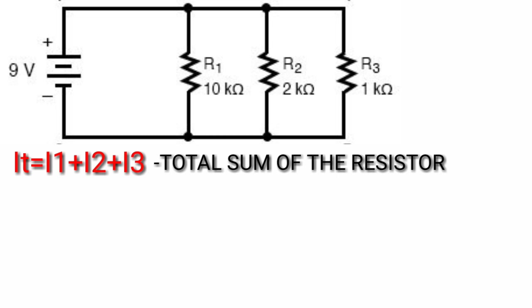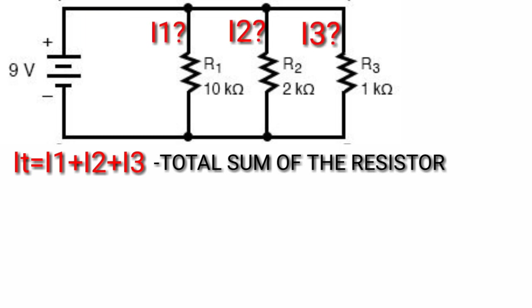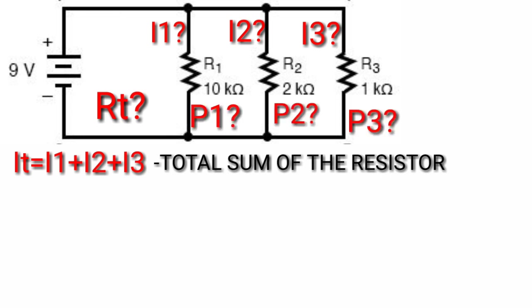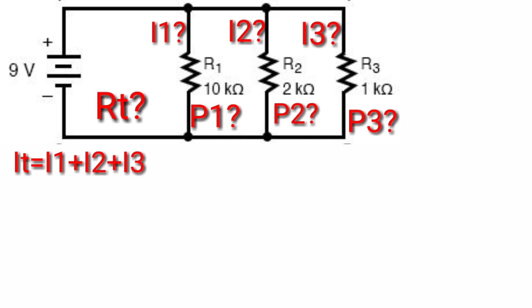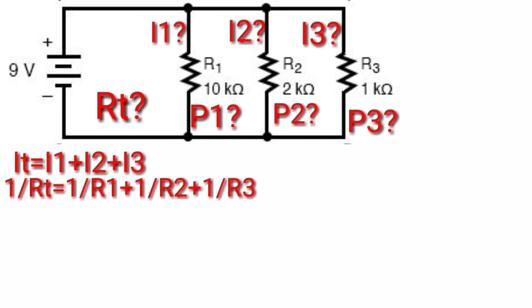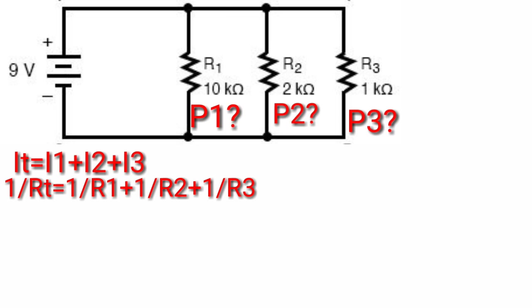Now let's determine the total current flowing in the circuit, the current from each resistor, the total resistance, and also calculate the power from each resistor. To calculate the total resistance, the formula is: 1 over RT equivalent to 1 over R1 plus 1 over R2 plus 1 over R3.